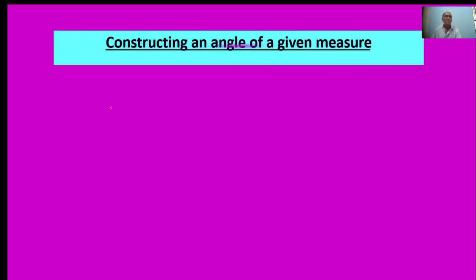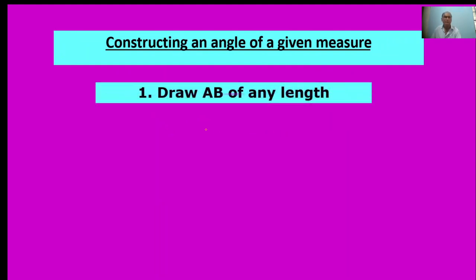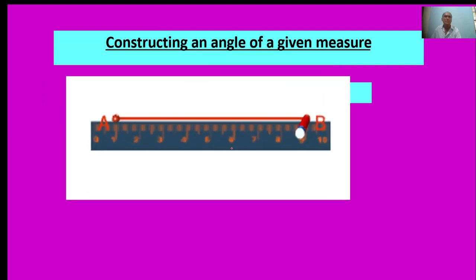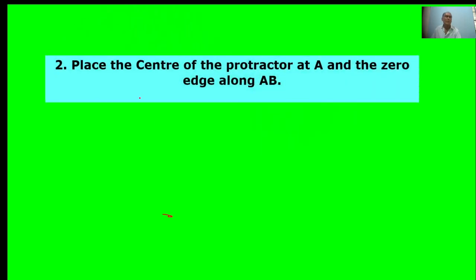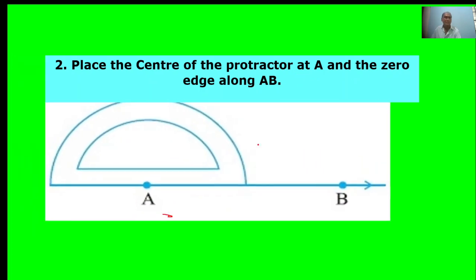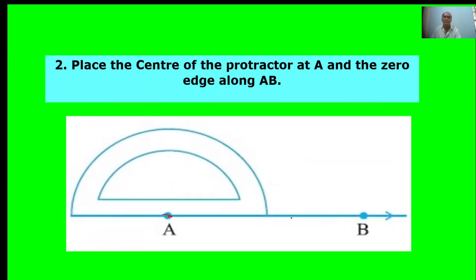Constructing angles of given measures. First, draw AB of any length. Second point: Place the center of the protractor at A and the zero edge along AB. Here is A. Pick zero. This is the protractor edge.